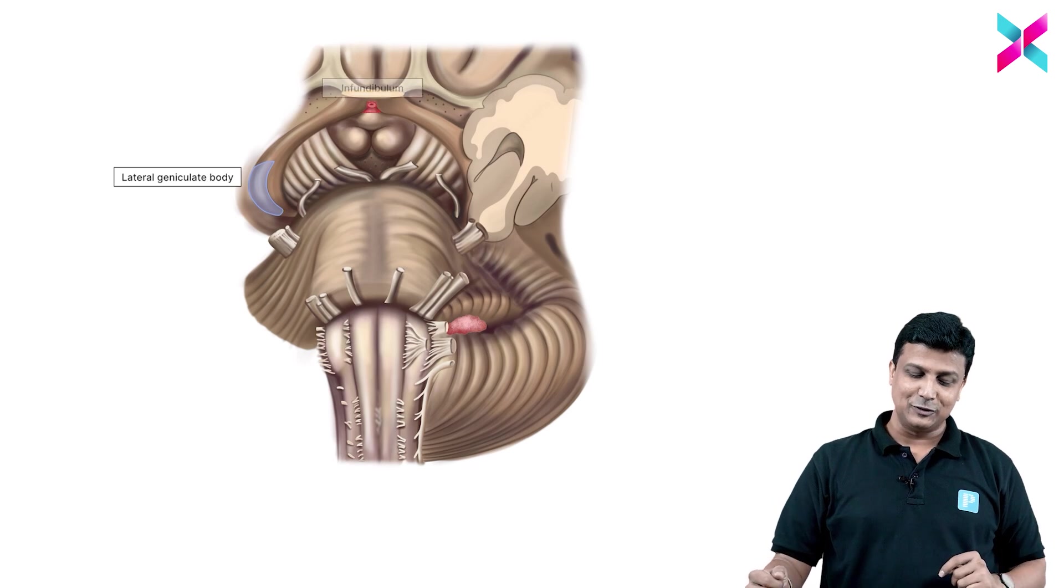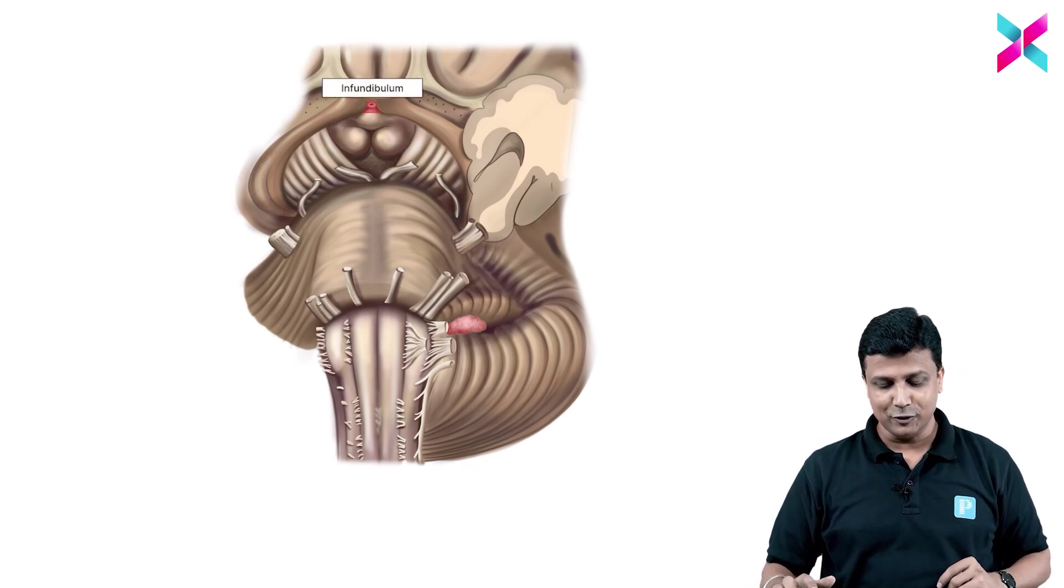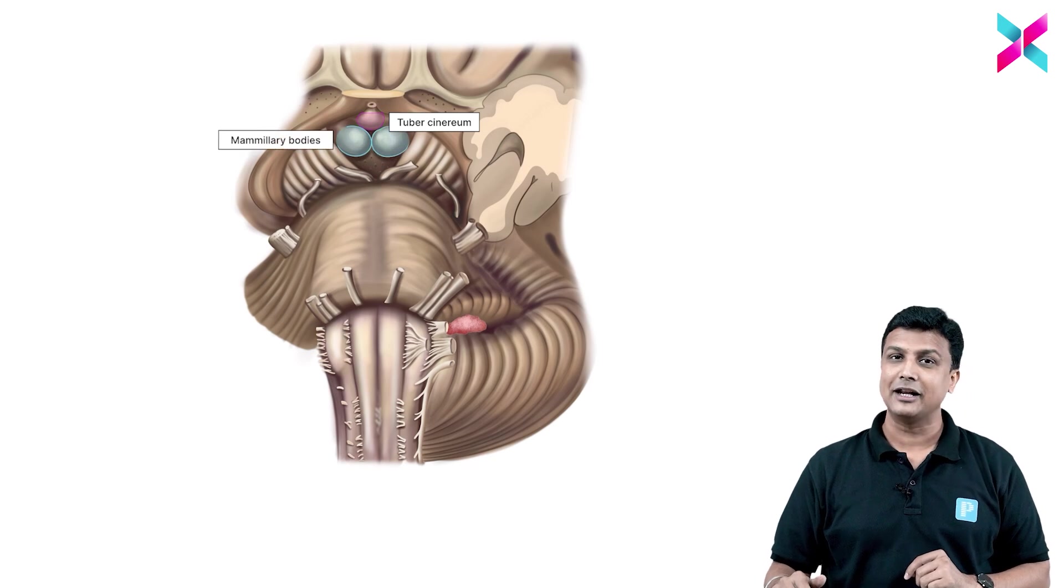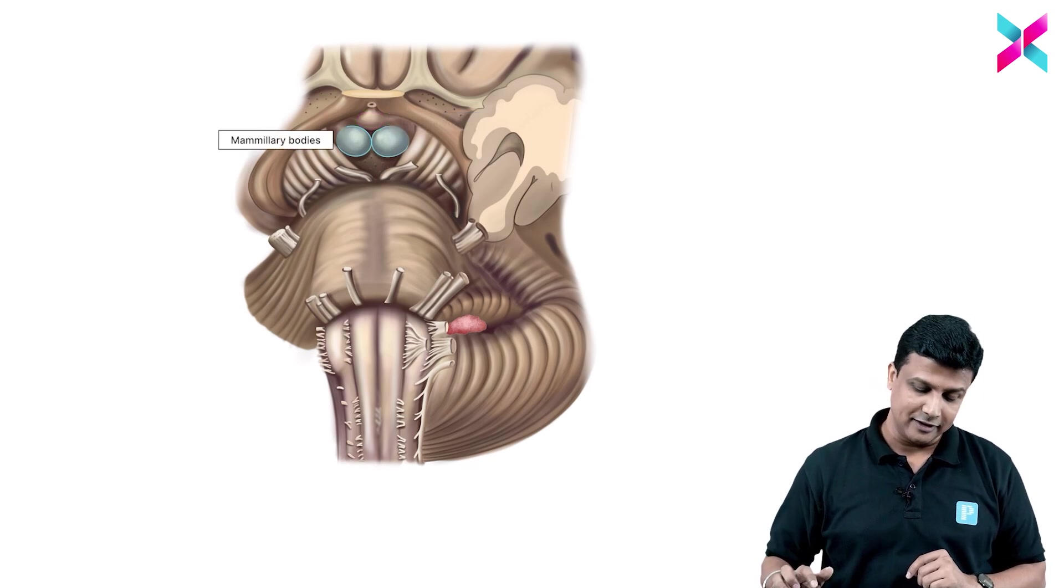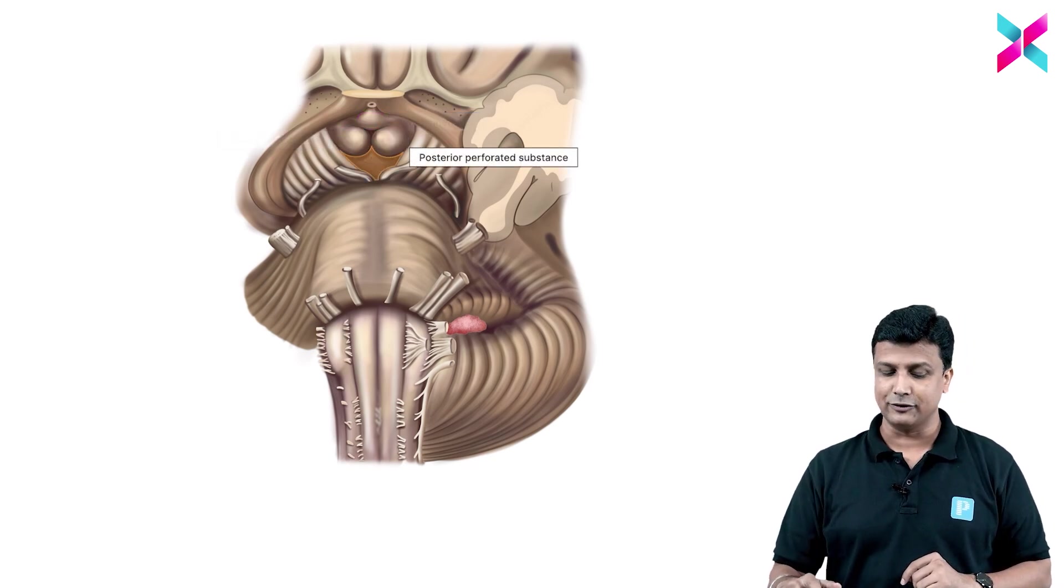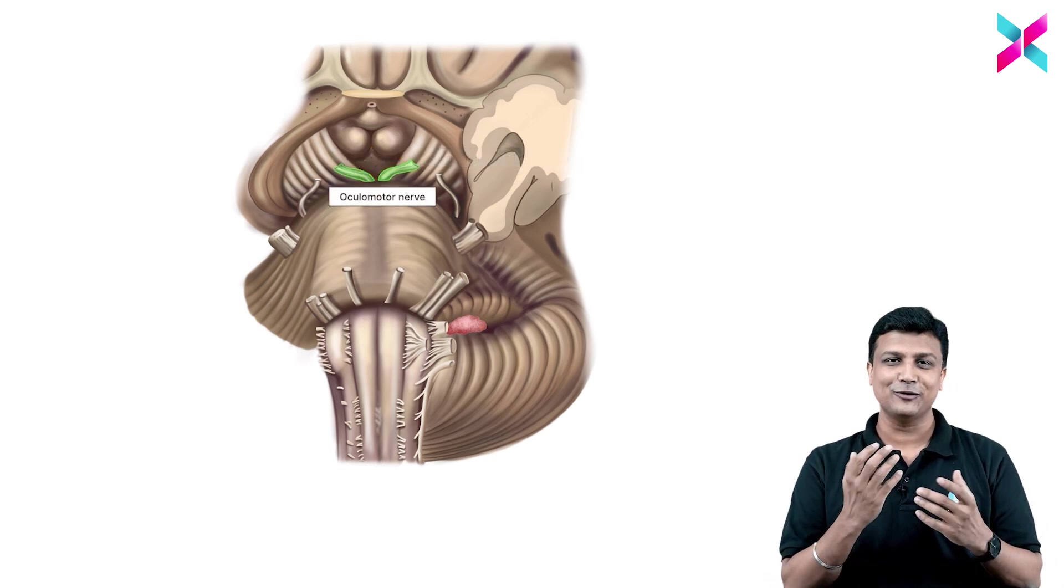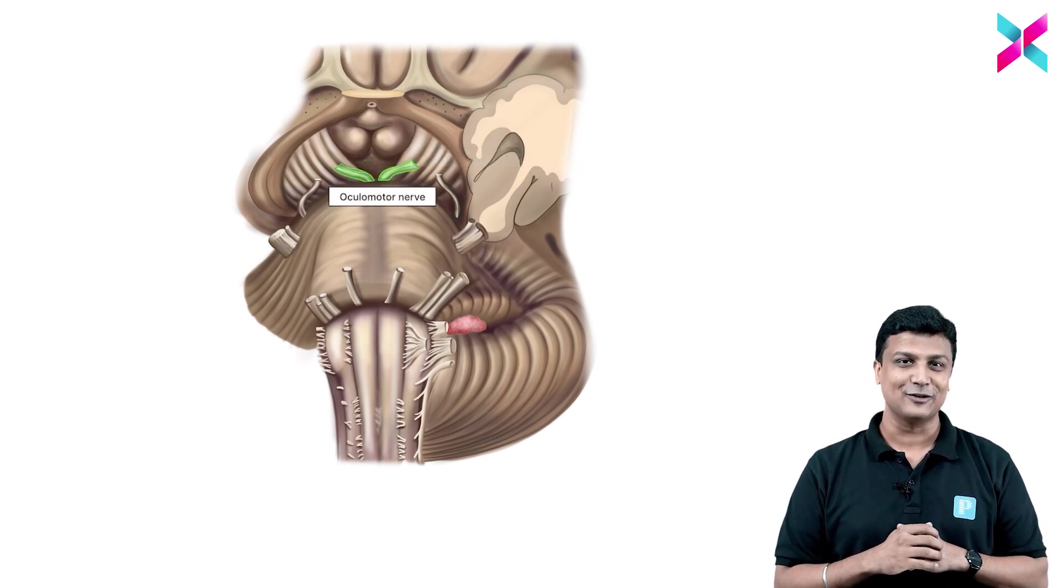Then after that, of course we know this structure - that is infundibulum, followed by tuber cinerium, followed by mammillary body. And then followed by this one here will be the posterior perforated substance. And then this is the cranial nerve number three. All of them I taught you in the interpeduncular fossa contents.